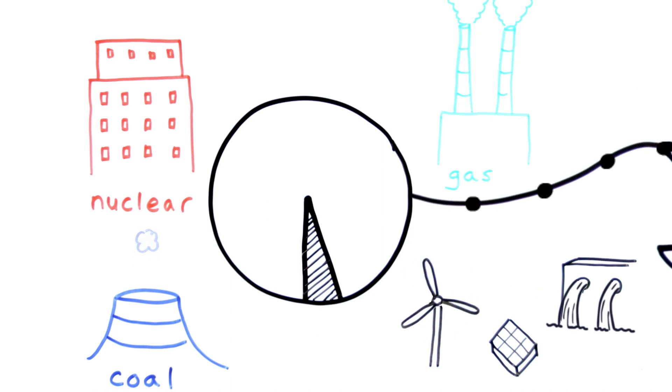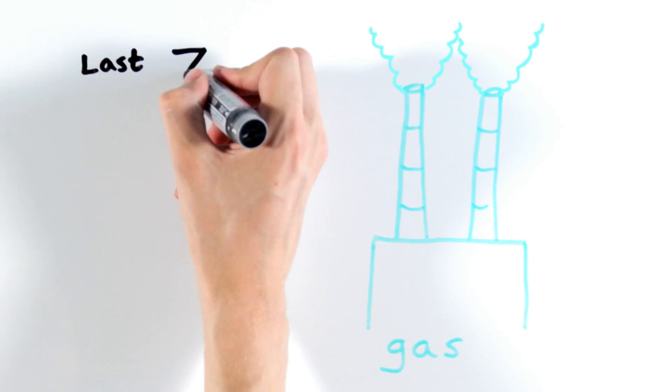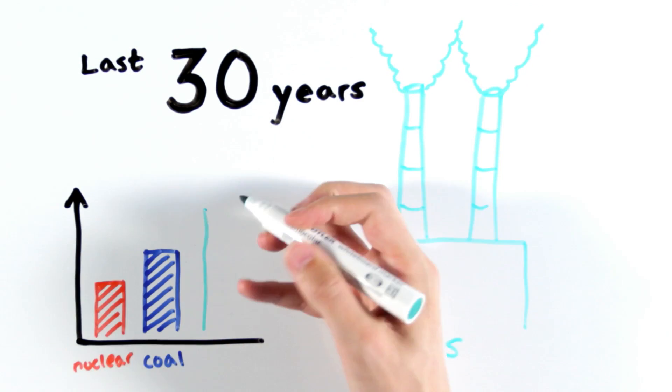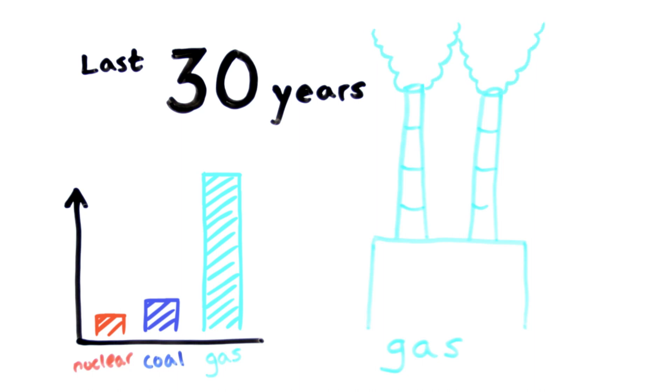For this story, we're going to focus on gas. Because in the last 30 years, it has overtaken coal as our biggest source of fuel for electricity production. Let's start with the science.